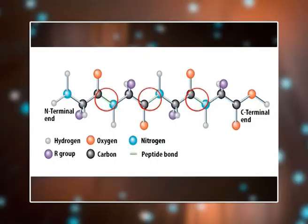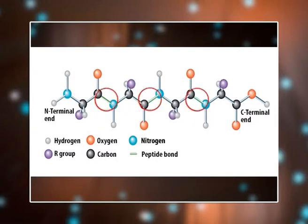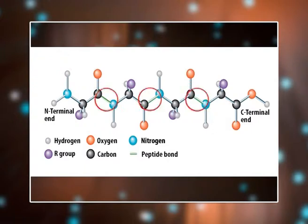The sequence of amino acids in a polypeptide chain is known as the primary structure of proteins. The primary structure is responsible not only for the final shape of the protein but also for its biological function. It is the linear sequence of amino acids.